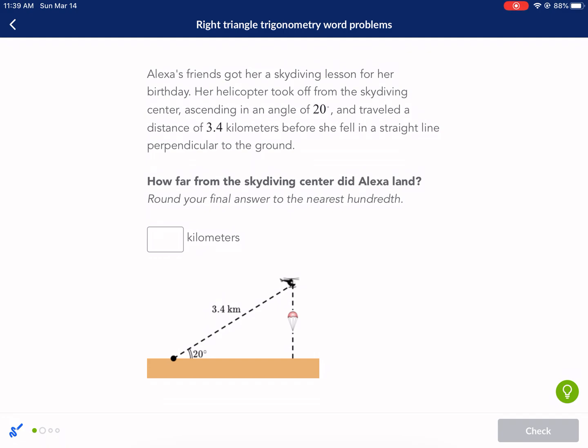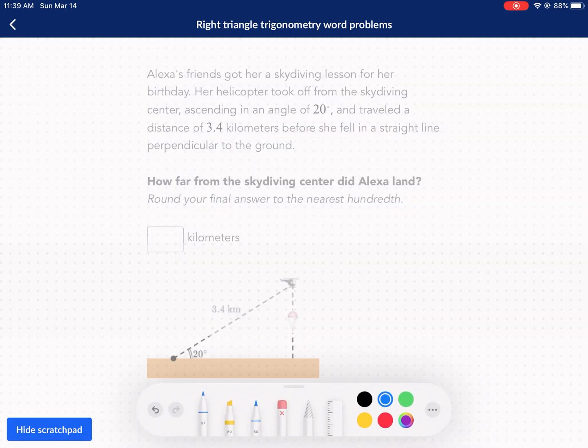Now we're on to the next problem. Alexa's friend got her a skydiving lesson for her birthday. Her helicopter took off from the skydiving center, ascending at an angle of 20 degrees and traveled a distance of 3.4 kilometers before she fell in a straight line perpendicular to the ground. How far from the skydiving center did Alexa land? Let's just hope she had her parachute.